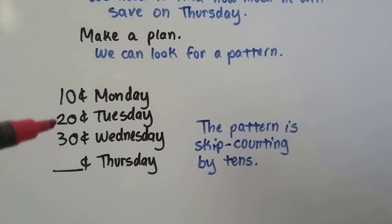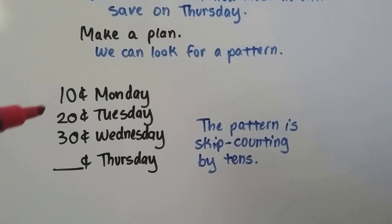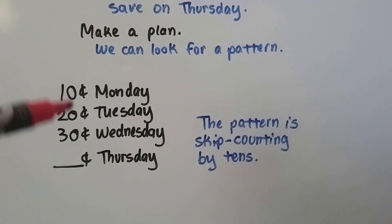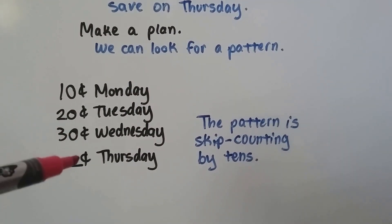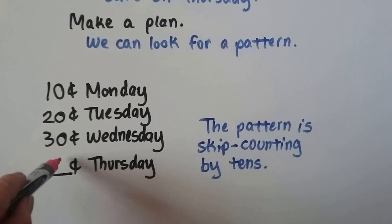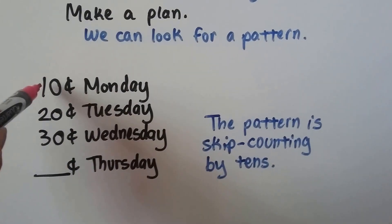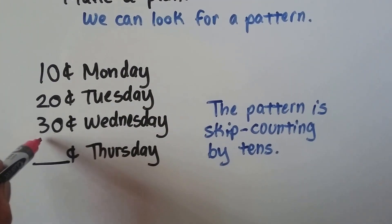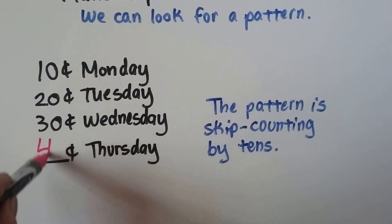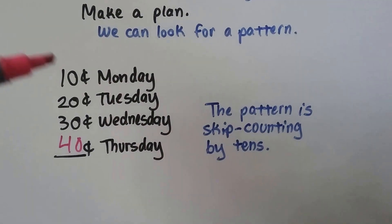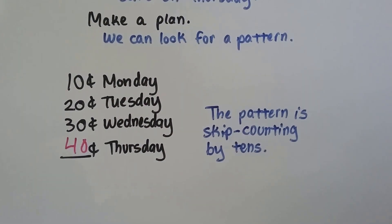The 10s are going up by 1 each time — 1, 2, 3 — and the ones place is staying a 0. So Thursday would be 40 cents. We just followed the pattern.